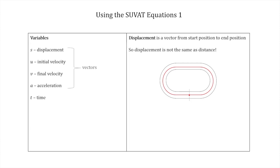In fact, the four variables S, U, V, and A are all vectors, and only time is a scalar, because these first four variables have a direction. We talk about displacement in a specific direction relative to an origin — usually where the body starts. Velocity and acceleration similarly can be in a positive or negative direction.